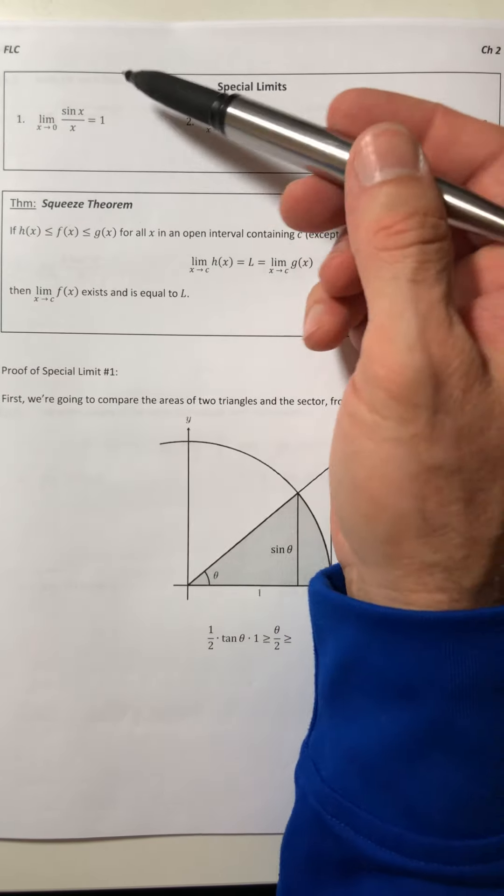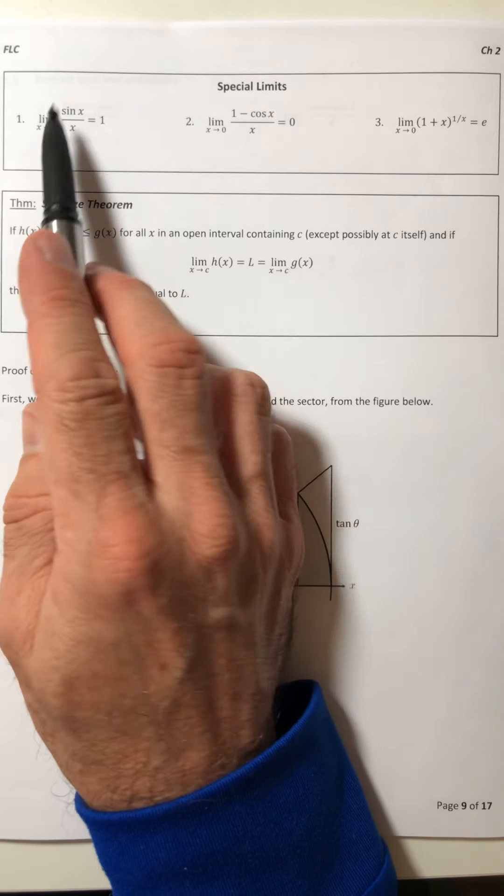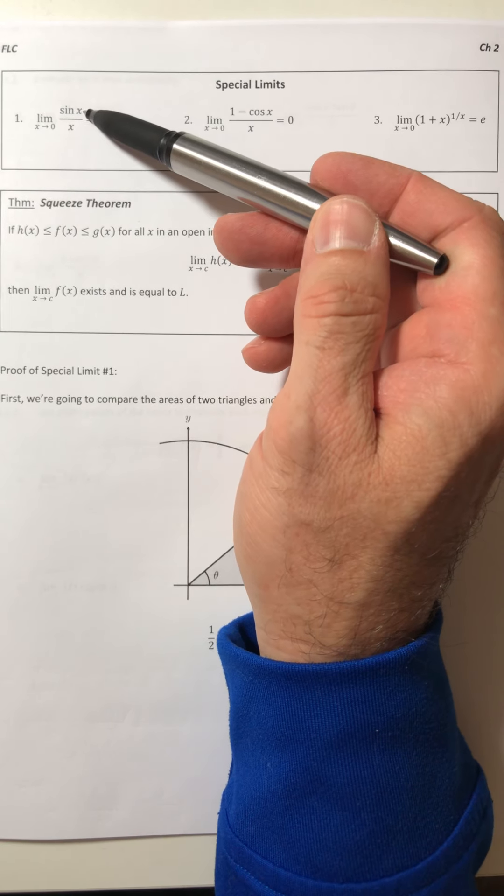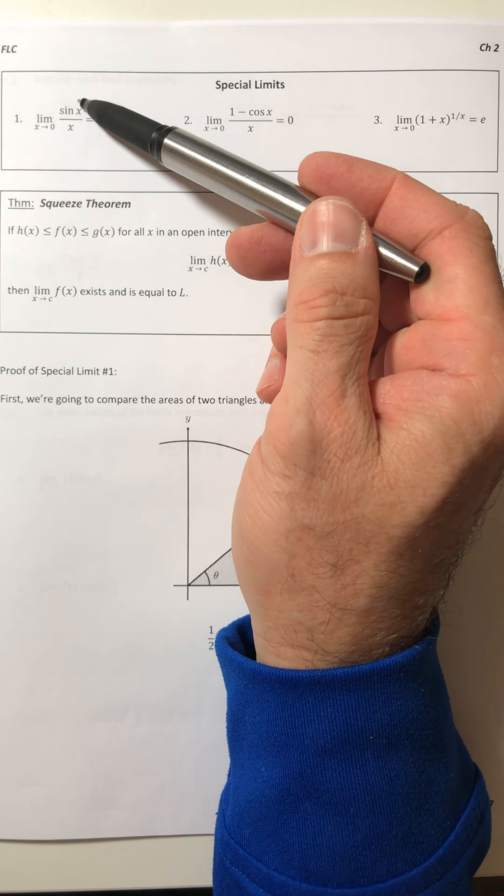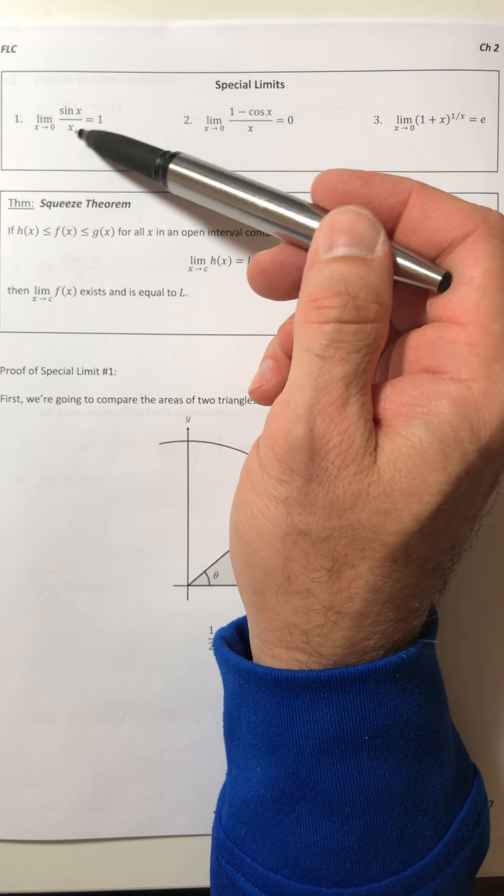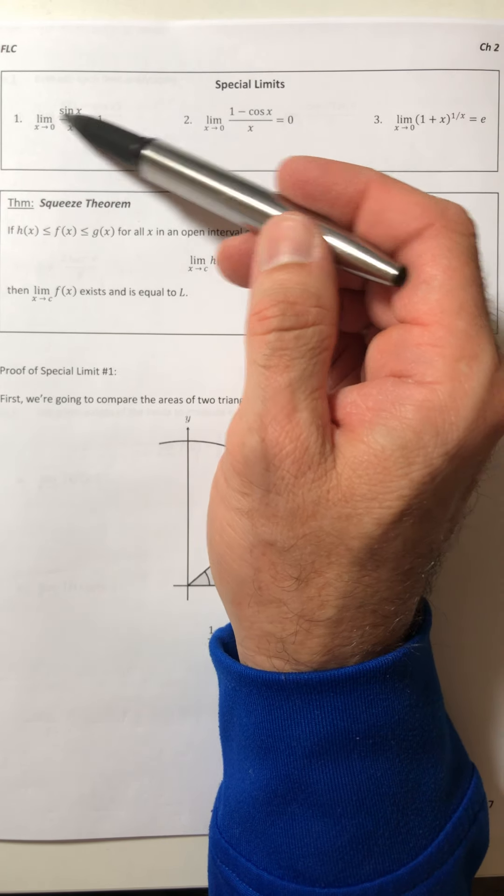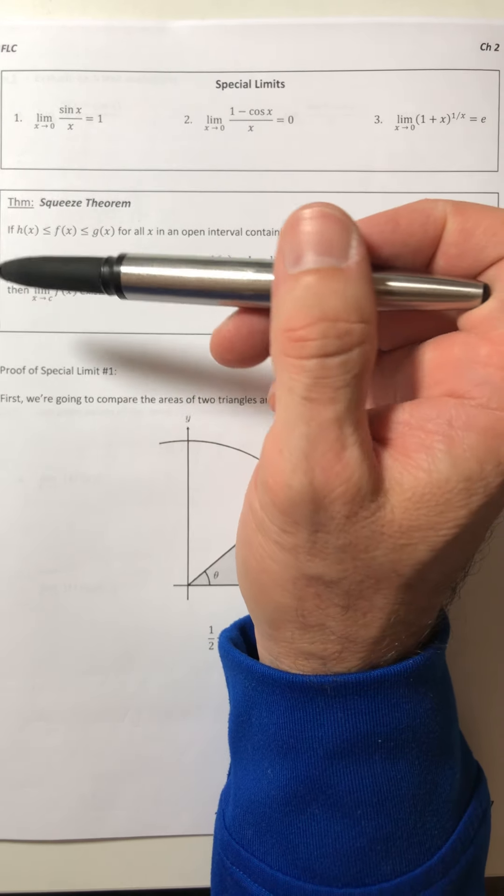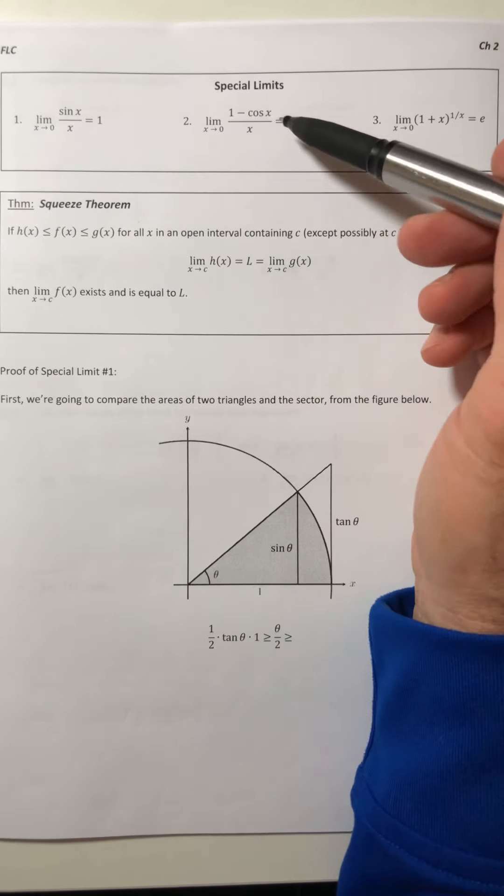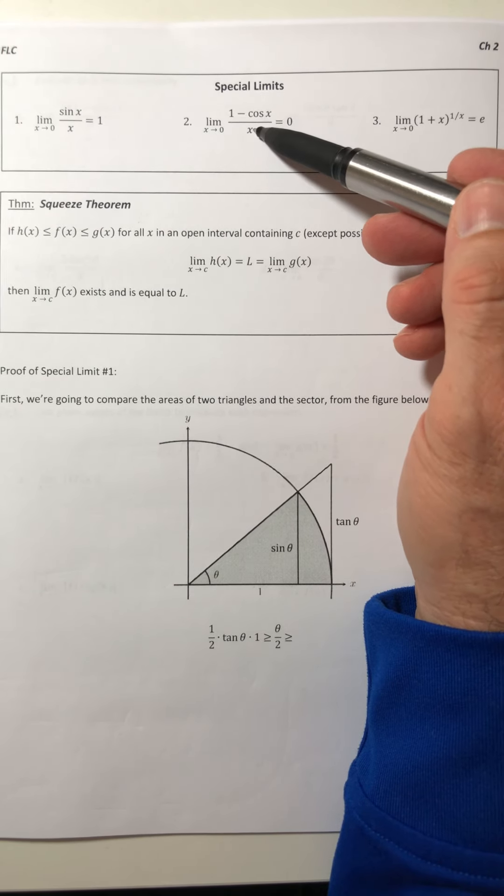The key thing with this one, and actually the next one too, is that these special limits are going to apply when the angle and the denominator match. So on this one, if it was sine 2x over 2x, that would equal one. If it was sine of 4x over 4x, that would also equal one.